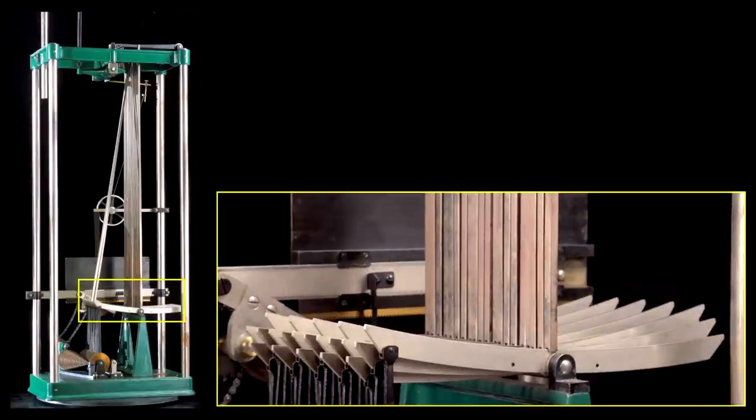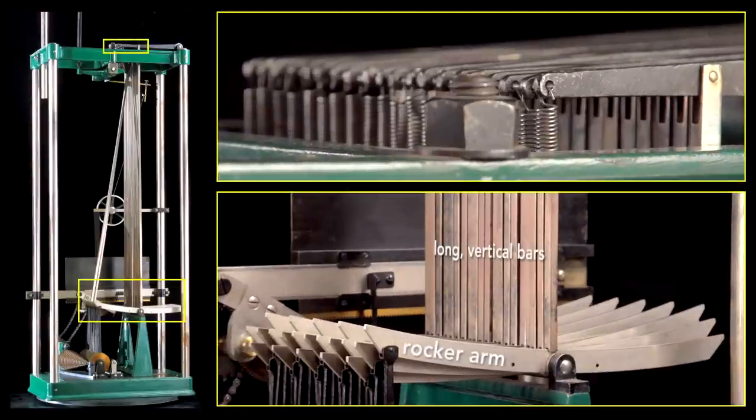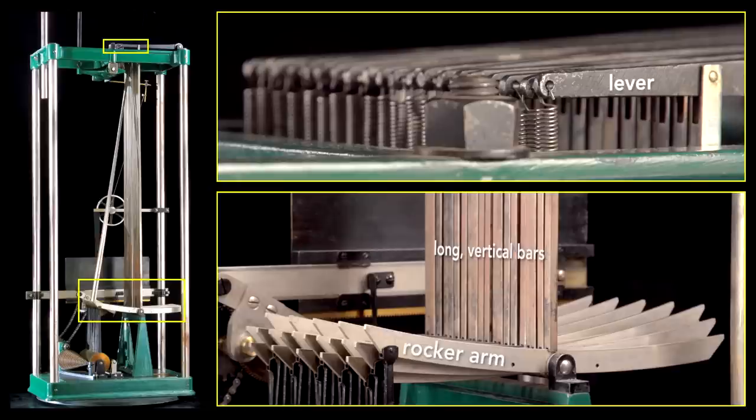At the bottom, a series of long vertical bars rest on each rocker arm. At the top, these bars attach to levers that are spring-loaded.